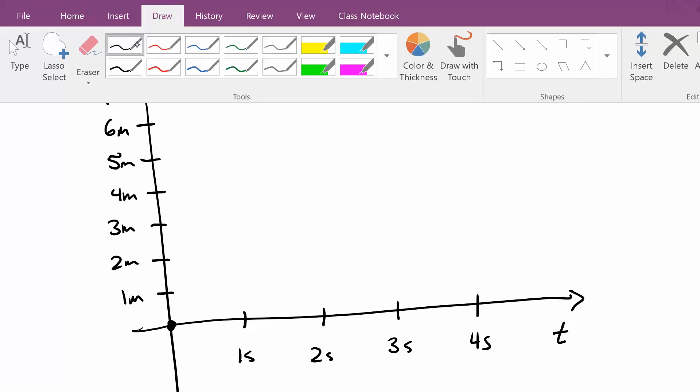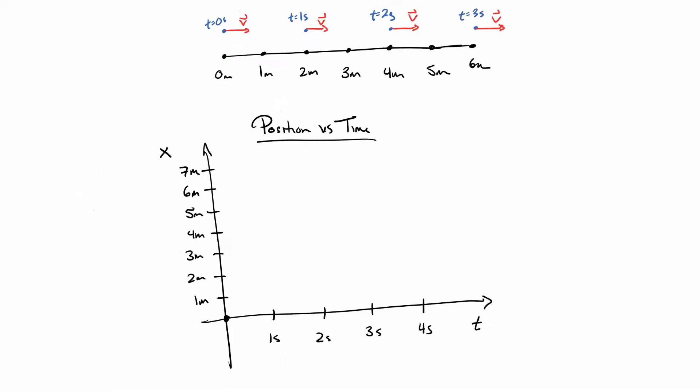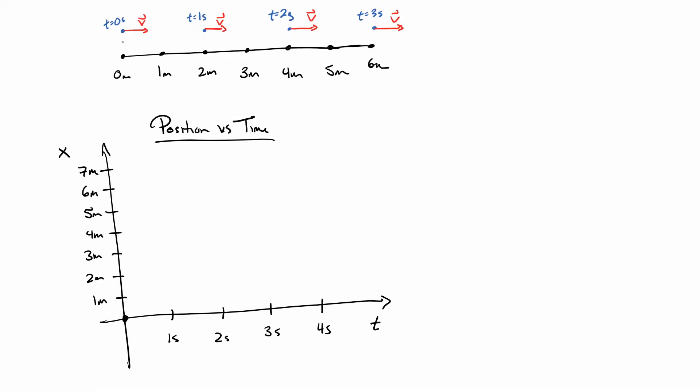So all I want to do is look up at these data points. I see at zero seconds, I'm at zero meters. At one second, I'm at two meters. At two seconds, I'm at four meters. At three seconds, I'm at six meters. So this is a nice little position versus time graph.